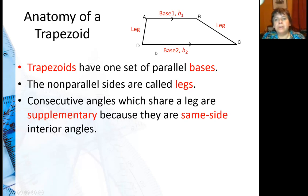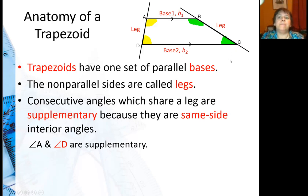Consecutive angles which share a leg are supplementary. Why is that? So here I have my leg and I turn that into a transversal. These two segments are parallel, so those two angles are same side interior, which makes them supplementary. So angle A and angle D are supplementary. Similarly, I can do the same thing with the other leg, and I can see that angle B and angle C are also supplementary.